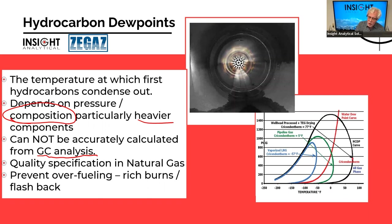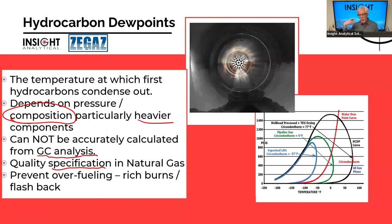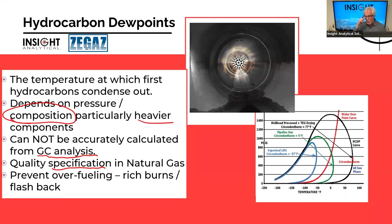Hydrocarbon dew point is an important quality specification in natural gas and is very important from a fuel burning perspective. Europe implemented specifications to prevent high hydrocarbon dew points from causing issues in furnaces, such as rich burns and flashbacks. The same applies to turbines — a slug of liquid showing up in a turbine can cause tremendous damage. So we want to know: what is my hydrocarbon dew point, and is it suitable for the burner I'm going into?